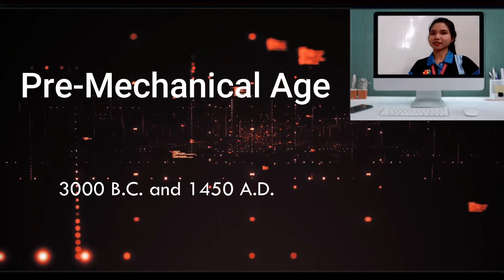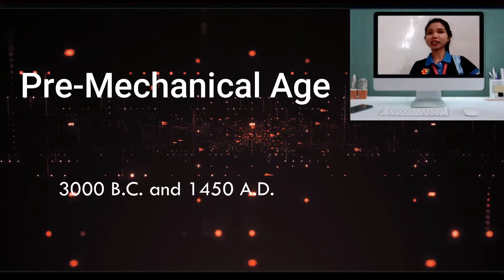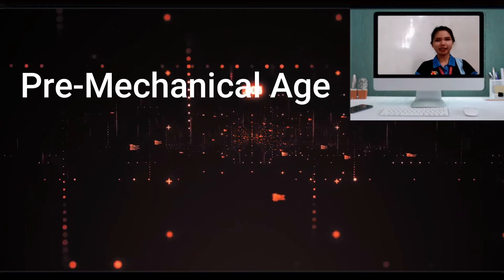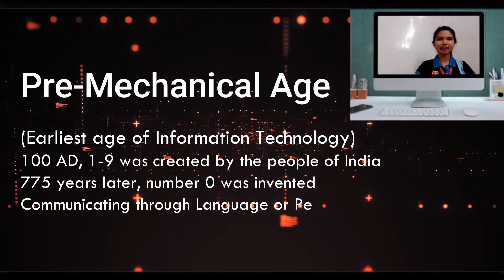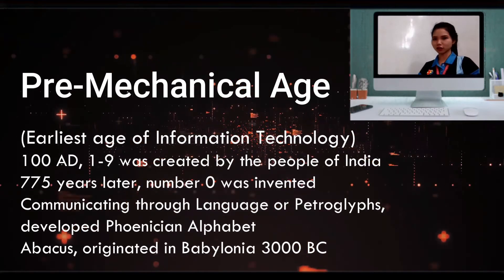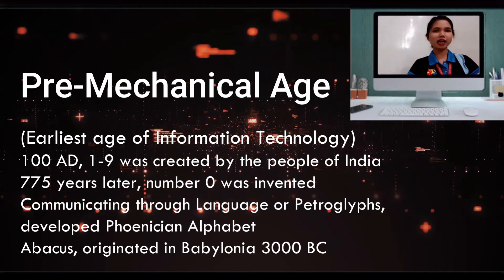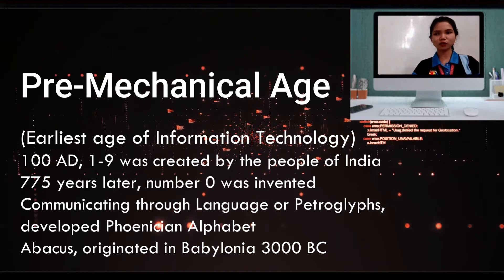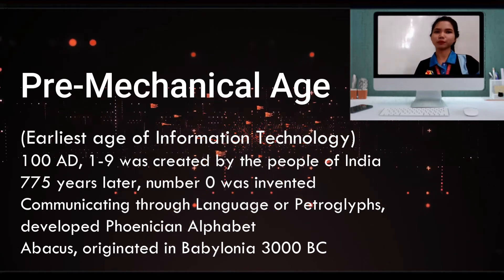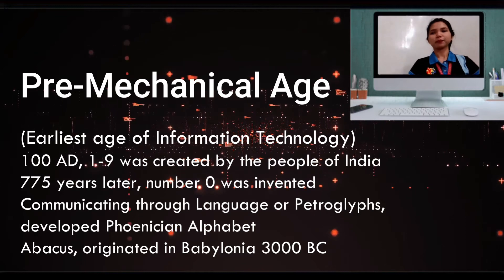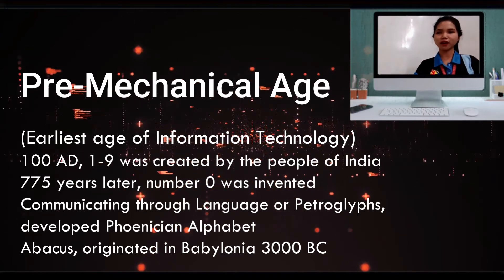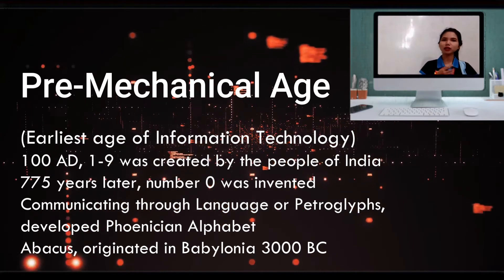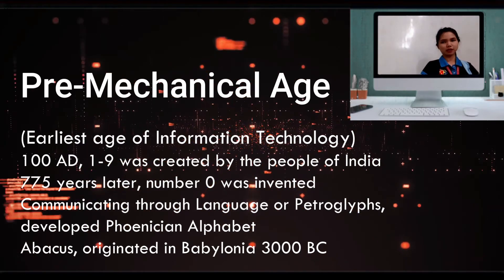As a summary for the first age: the pre-mechanical age is between 3000 BC and 1450 AD — it was the earliest age of information technology. Around 180 AD, the people of India created the numbers 1 to 9. Then 775 years later, number 0 was invented, and communicating was through picture glyphs.